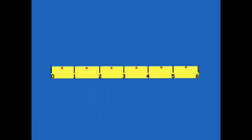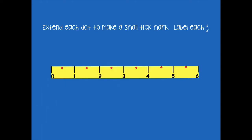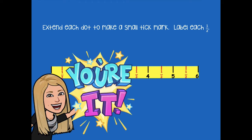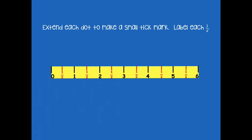Here we have that with our dots. We're going to extend each dot to make a small tick mark and label each one half. You can draw your tick marks first and then go back in and label your halves. Pause the video, add in your halves, and then click play when you're ready for the next step.